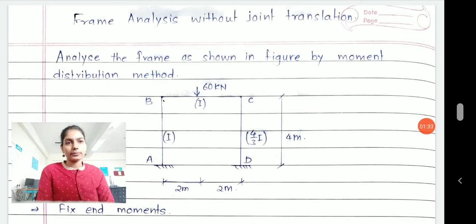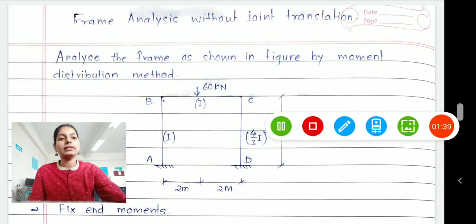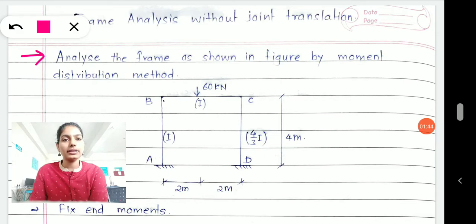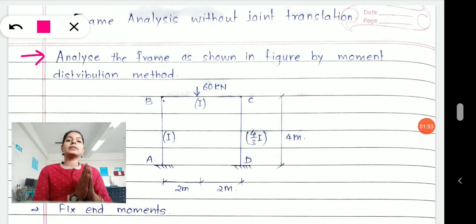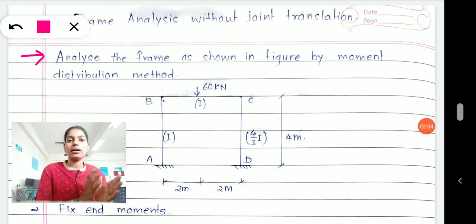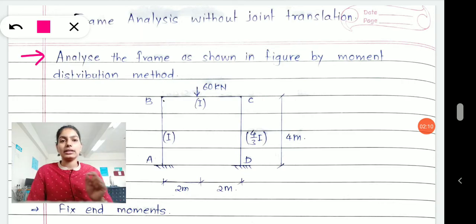In today's class we will focus upon frame analysis without joint translation. Let's read the question. The question is: analyze the frame as shown in the figure by moment distribution method. Sometimes they will tell you to analyze a given sway frame or non-sway frame, but most of the time university question papers or MCQs ask you to identify which type of frame it is. The very first task in analyzing the frame is identifying whether it is non-sway or sway.